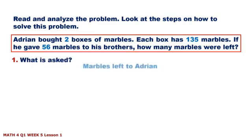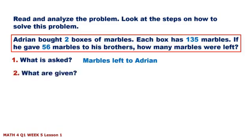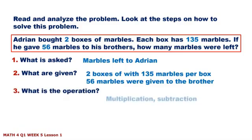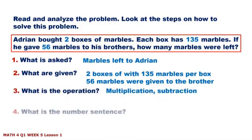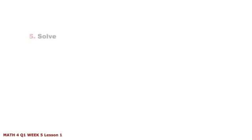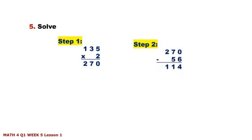What is asked? What are given? What is the operation? What is the number sentence? Let's solve. Step 1: 135 times 2 equals 270. Then Step 2: 270 minus 56 equals 114. There are 214 marbles left with Adrian.